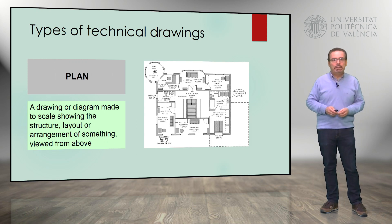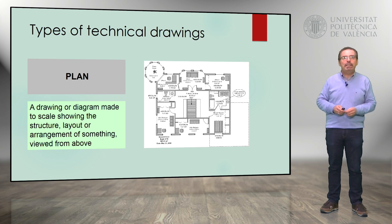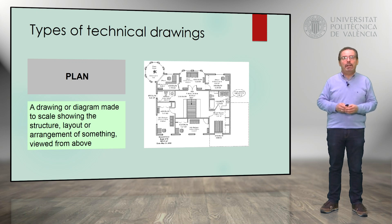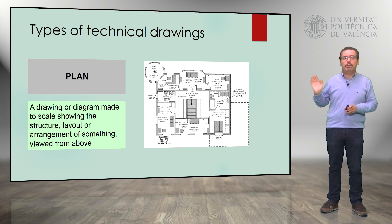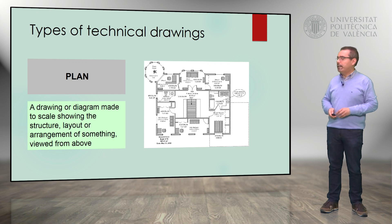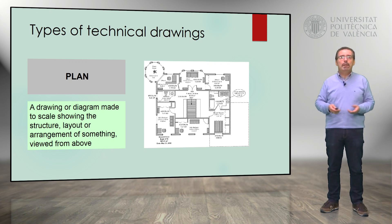The next drawing is very important — it's a plan. A plan is a drawing or diagram made to scale, showing the structure, layout, or arrangement of something viewed from above. That's the difference with the elevation: an elevation is at the same level, from rear or side, whereas a plan is seen from above. Here we have an example — typical floor plans of different buildings.